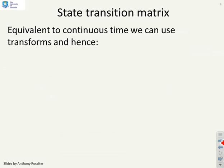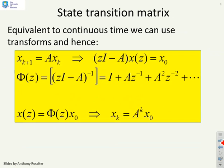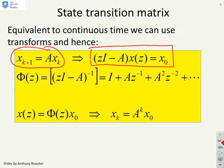First, let's do the state transition matrix. This is equivalent to continuous time, so we can use transforms, only Z-transforms rather than Laplace transforms. If we have a model x_{k+1} = Ax_k, then we can come up with a transform model like this: (zI - A)x(z) = x(0), where x(0) is the initial condition. Therefore, the state transition transform Φ(z) is going to be (zI - A)^{-1}. And you can do an expansion for that and find that it gives you I + Az^{-1} + A^2z^{-2}, and so on.